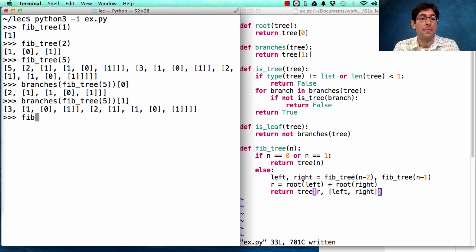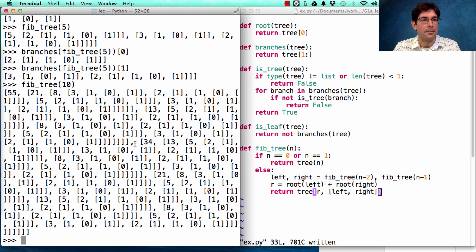And of course, as we've seen before, Fib trees can get very large if you pass in a large number. So, here's 55 at the root. And in order to construct this, I have branches that have branches that have branches that have branches. And so, I see these long sequences of closed brackets.